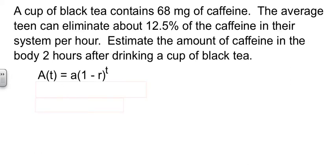So let's do a problem with this. According to research, a cup of black tea contains 68 milligrams of caffeine. How fast your body eliminates caffeine varies from person to person, but the average teenager can eliminate about 12.5% of the caffeine in their system every hour. So our job is to estimate the amount of caffeine that's still in your body two hours after you drink a cup of this black tea.